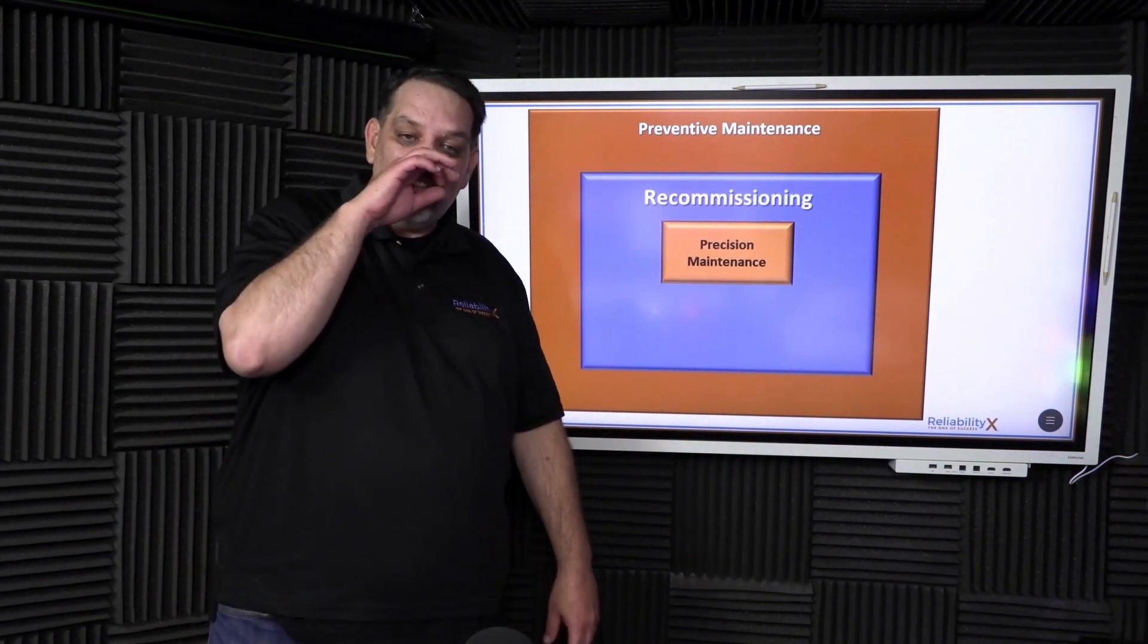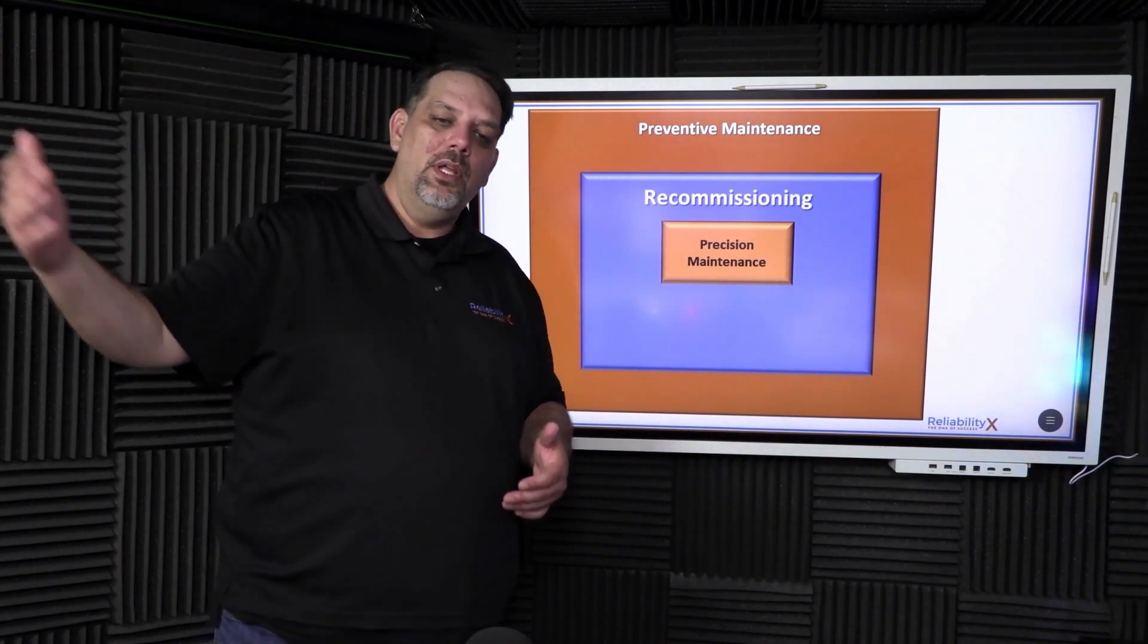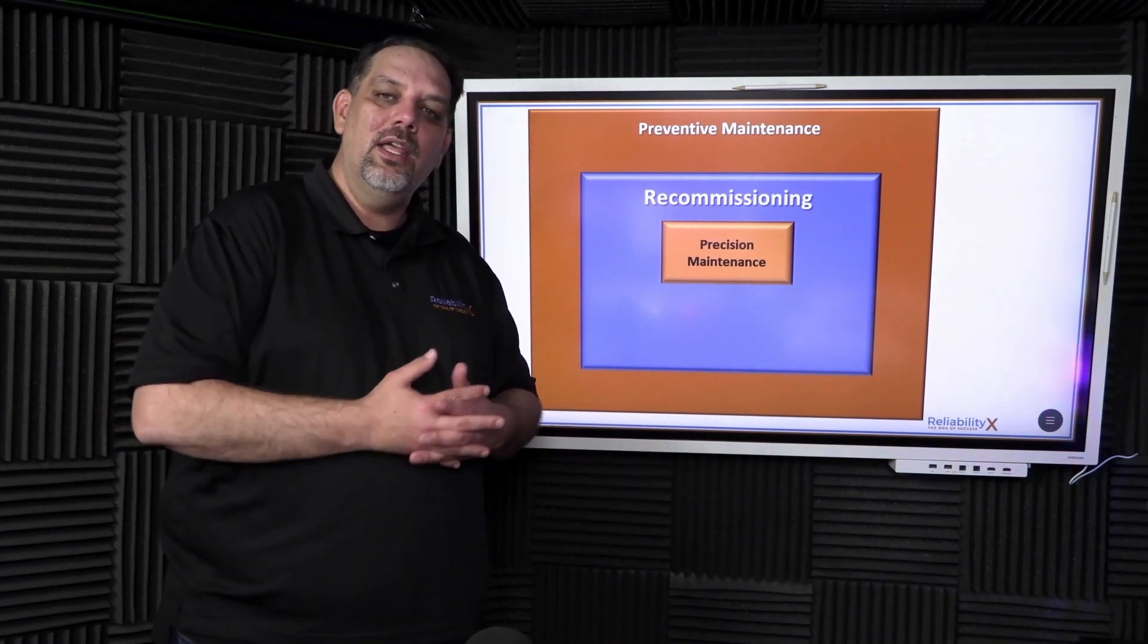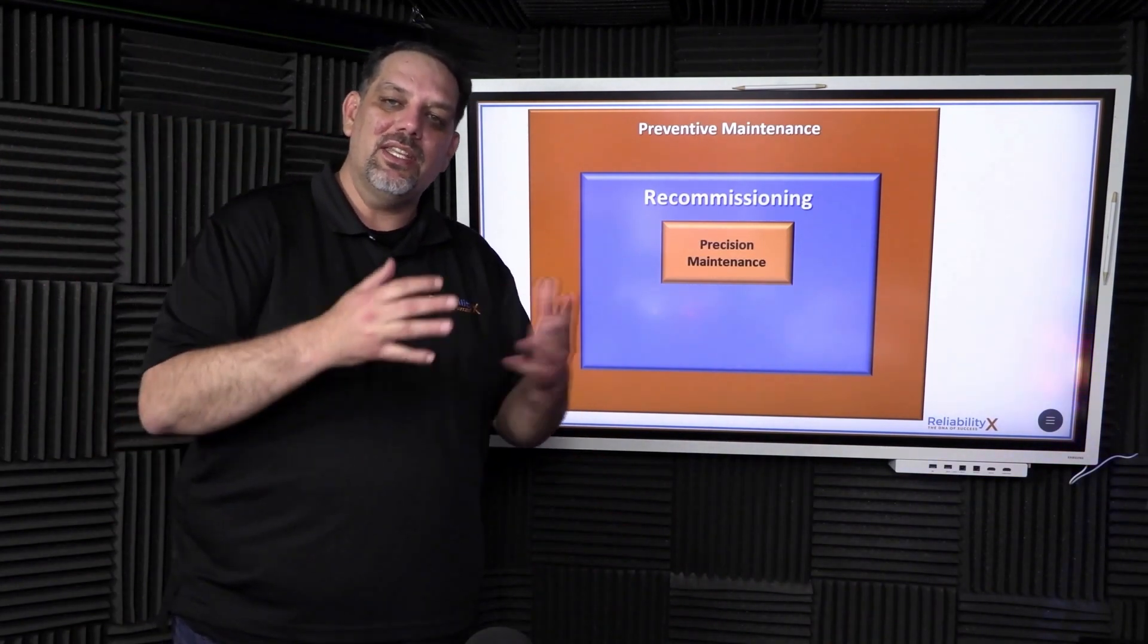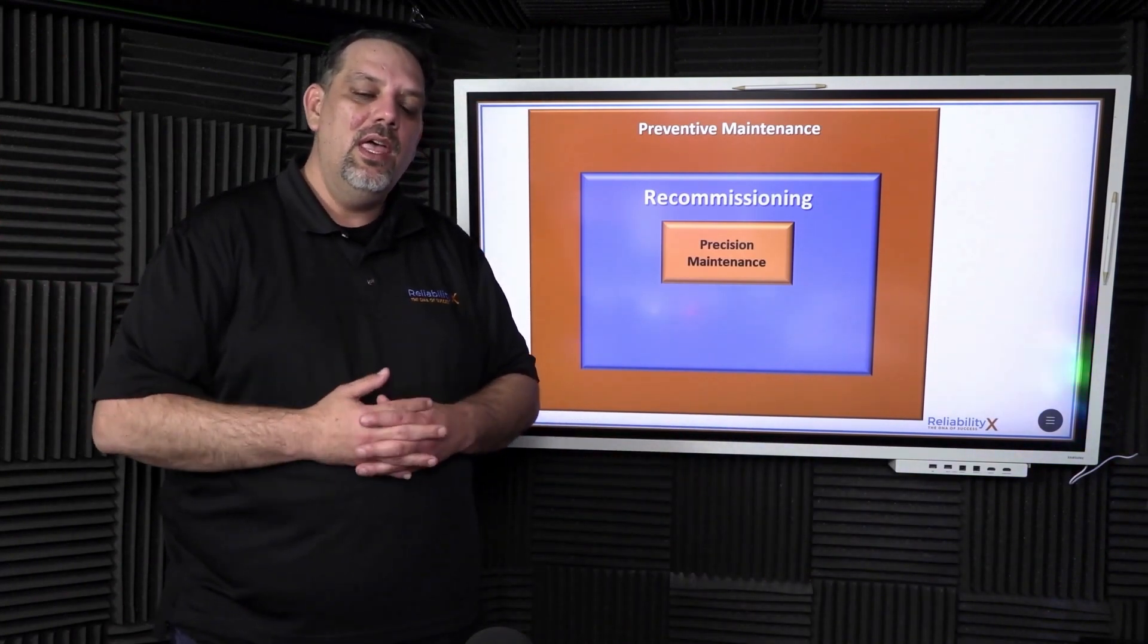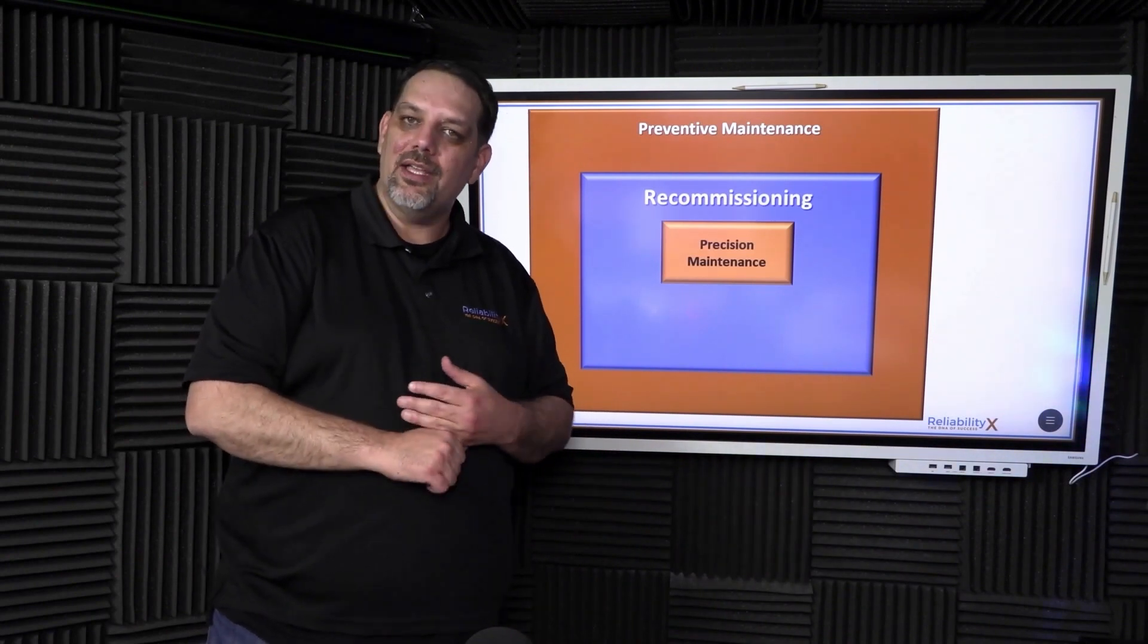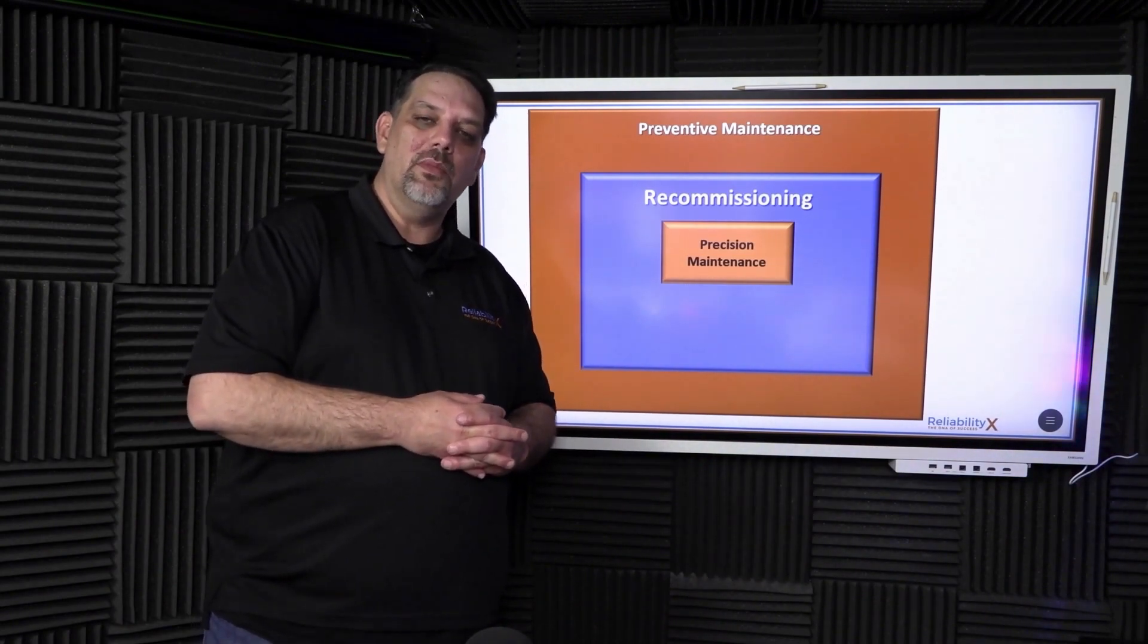The next is recommissioning. So recommissioning is any time we lock out a piece of equipment and bring it back up. Commissioning, by definition, is when we first start a line. That's engineering standard, as we commission the line, we're bringing it into service. Recommissioning means that we've locked it out, we've de-energized it, and now we're bringing it back into service. This is where we do a lot of our precision maintenance tasks.